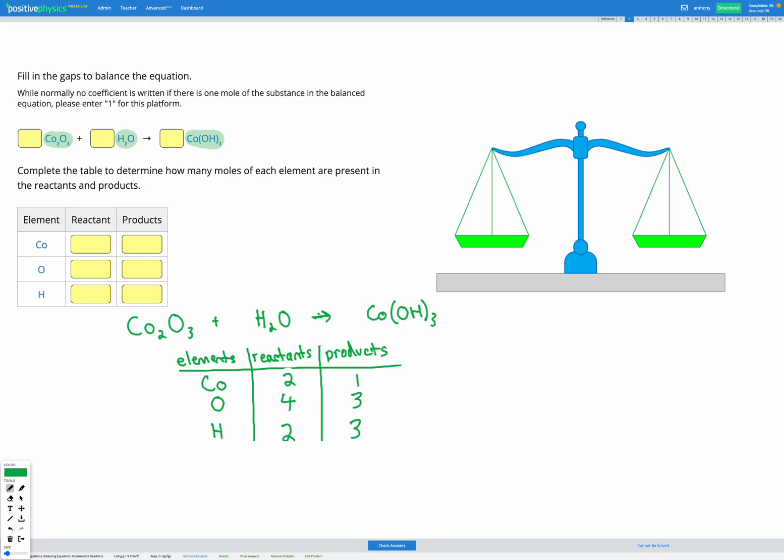Okay, so we can see here that we don't have anything balanced to start with. So we can choose where we want to begin. I'm going to start by adding some more Co on the product side to balance that part. Since you can see O appears in both the first compound and the second compound, that one might be a little bit trickier to figure out. So I'm going to start with the Co because I've only got one of them in that first compound. I don't have it in the second compound as well.